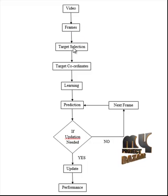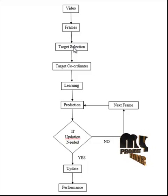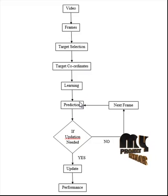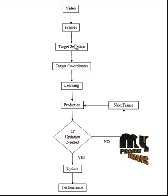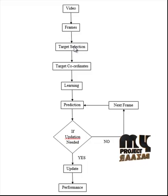From the pre-processed frames, targets are then selected. From any one of the video frames, the target that is to be tracked is selected. The position of the target is the input for the kernel functions. The target is tracked all over the video with the help of estimated positions calculated using multiple kernels.